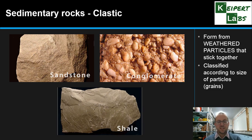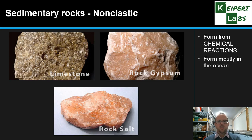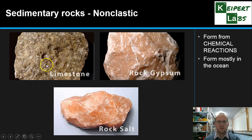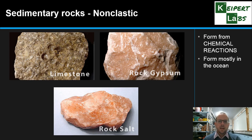Non-clastic sedimentary rocks form as a result of chemical reactions. Rather than physical pieces sticking together, a chemical change — particularly in the ocean — causes certain chemicals to build up and deposit. Examples include limestone, rock gypsum, and rock salt. Limestone has the same chemical component as many seashells, and you can see fossilised imprints of seashells in limestone. Gypsum has the same chemical composition as chalk or calcium sulphate, and rock salt is just like the sea salt or table salt we would eat.